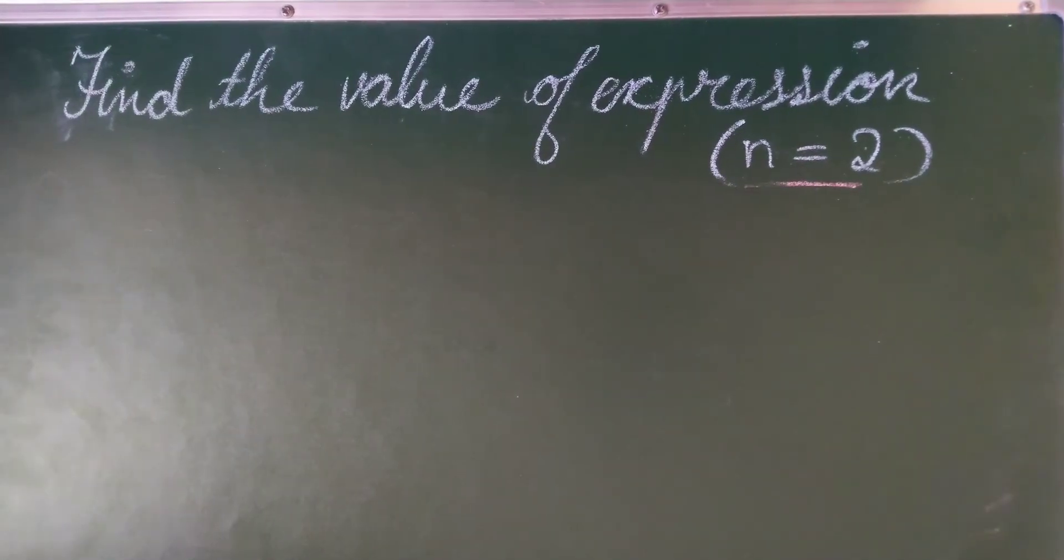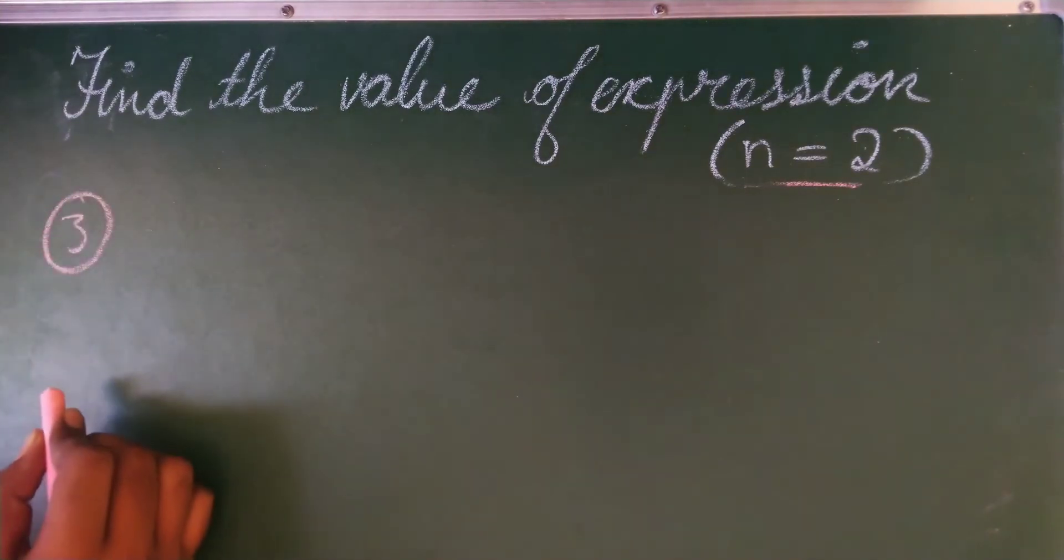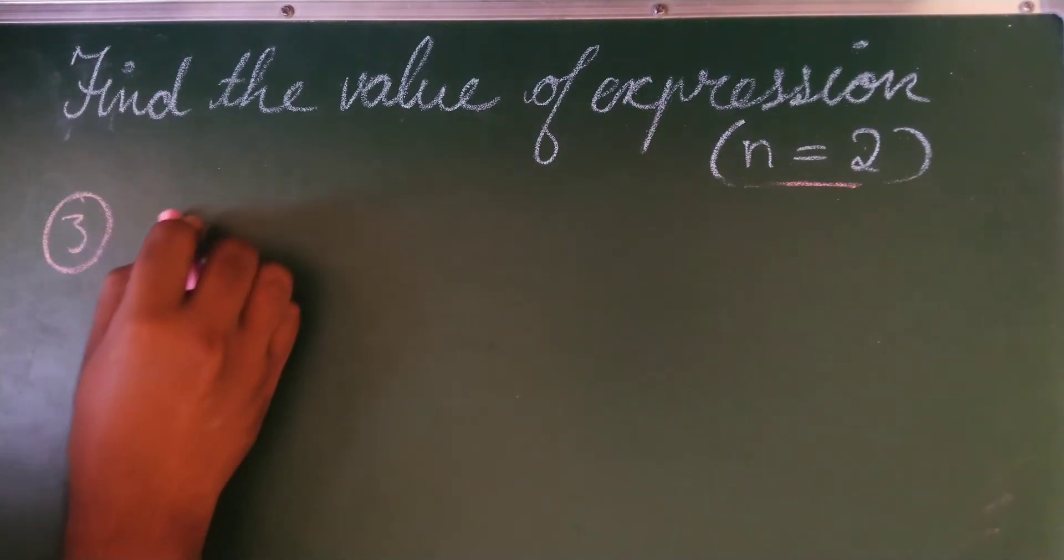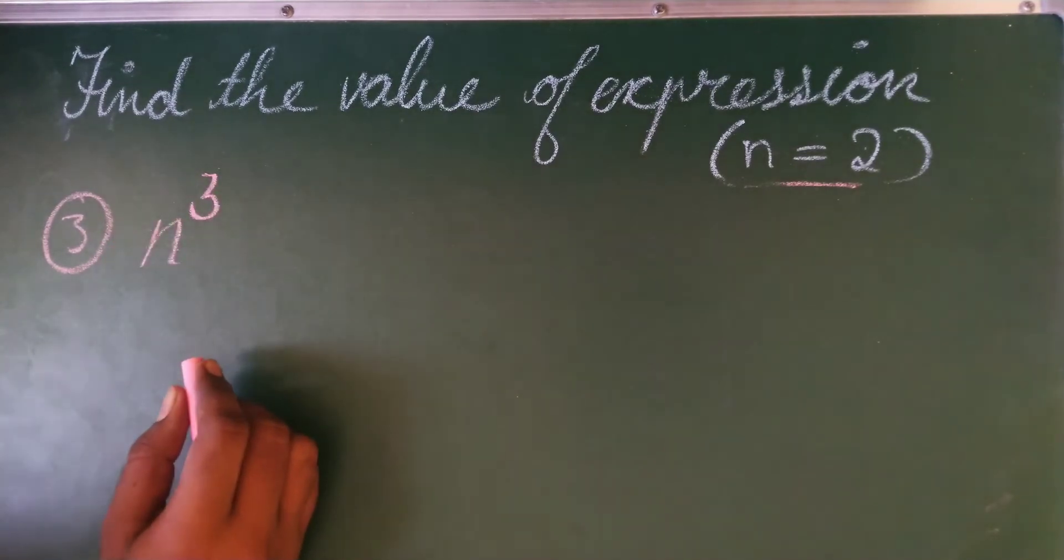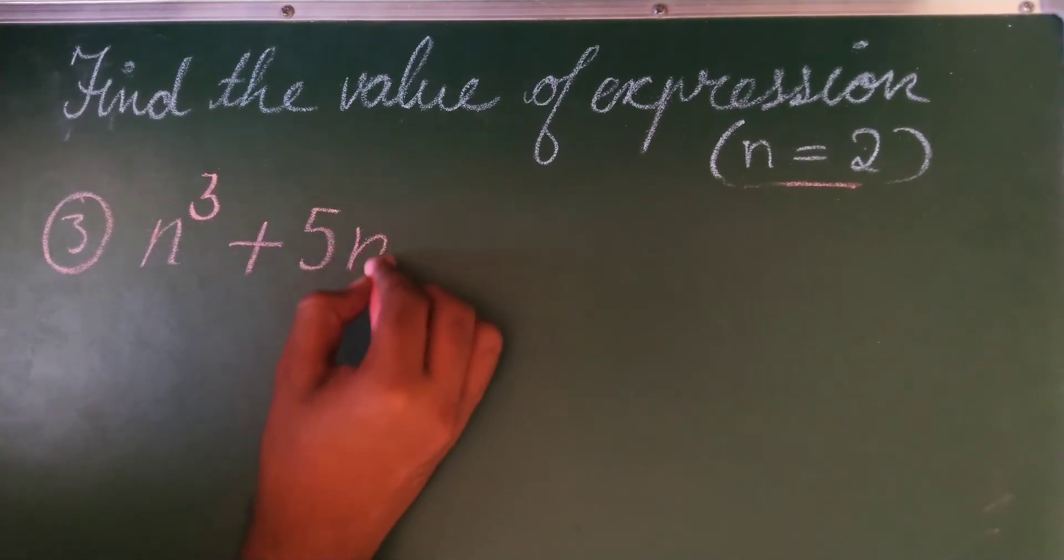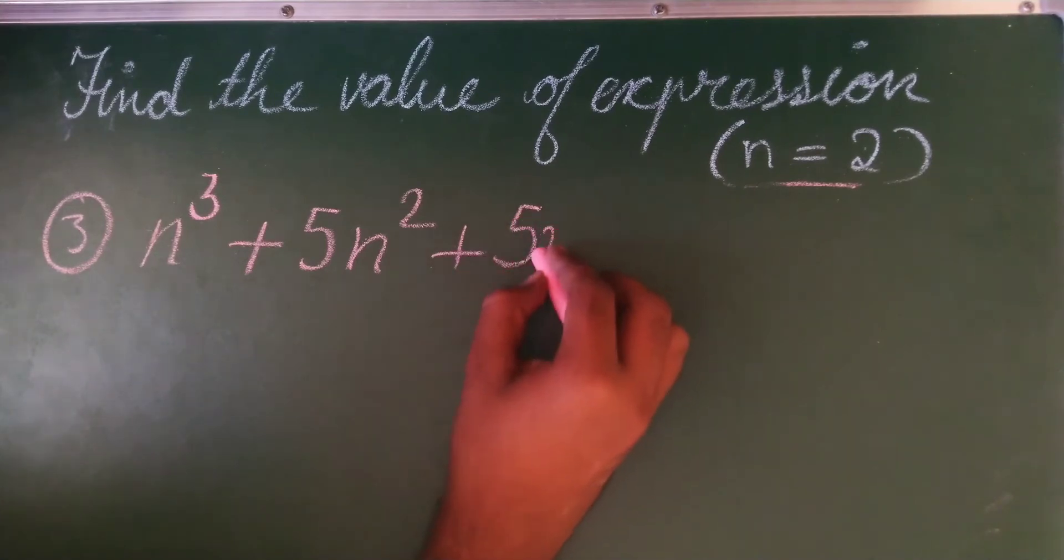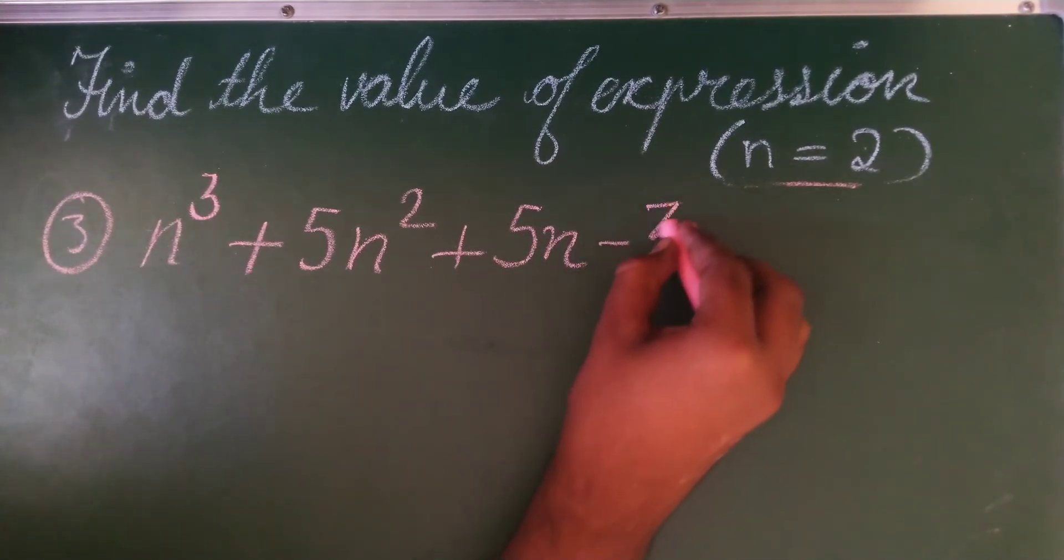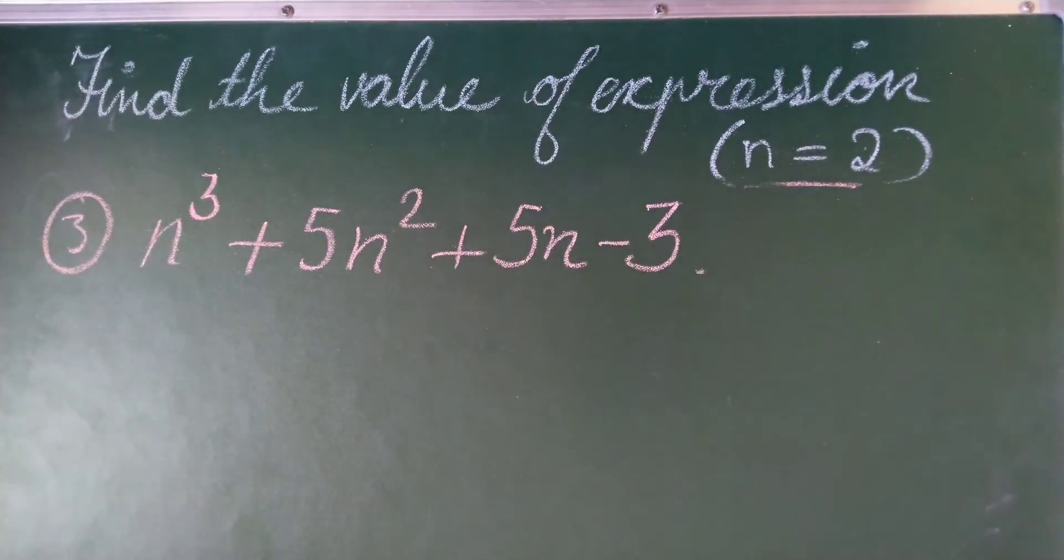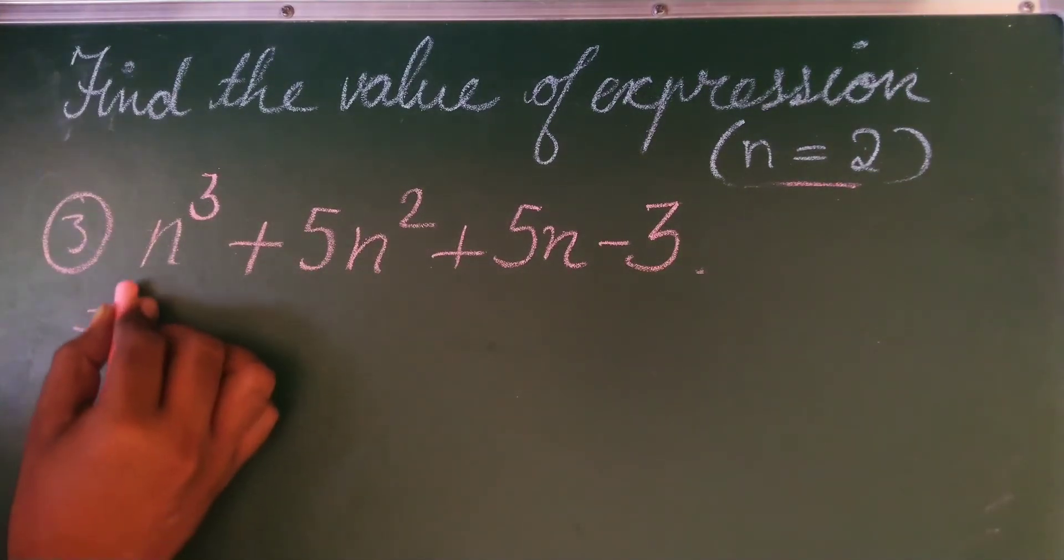So we will take one more complicated problem, third one. We will take n cubed or n power 3 plus 5n squared plus 5n minus 3. Little bit complicated problem. So in this what you have to do, we have to place in place of n, 2.